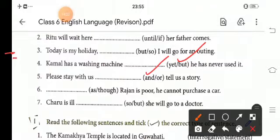Sixth one. As and though, though Rajan is poor, he cannot purchase a car.